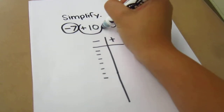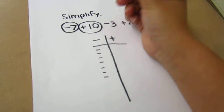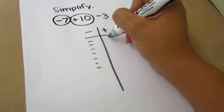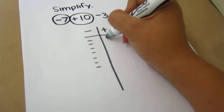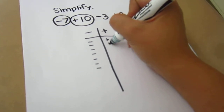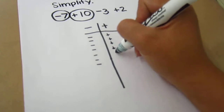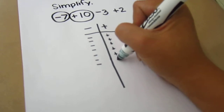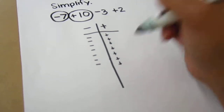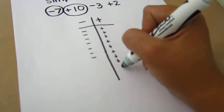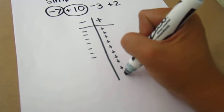The next term is positive 10, so on the positive side I'm going to go ahead and draw 10 positives — 1, 2, 3, 4, 5, 6, 7, 8, 9, 10.